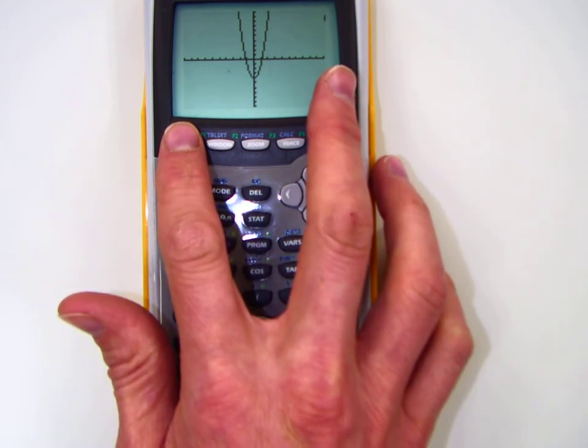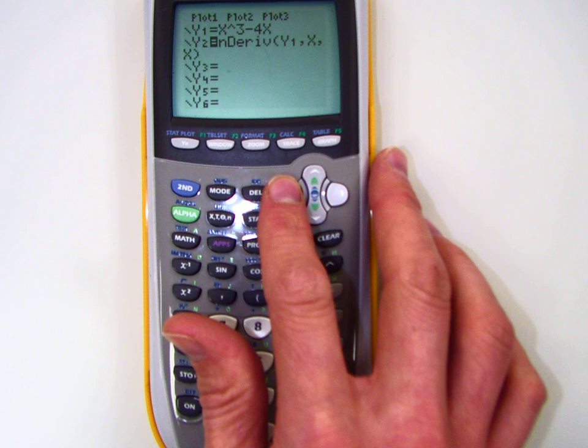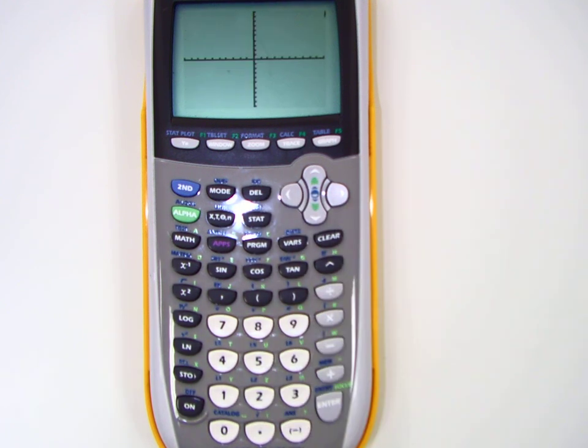So there's the derivative. Now if I want that one back, you go, boom, go back to y equals, go back to the equal sign, hit enter, so they're both black. Now it's going to graph both. It's a nice little feature. So there's my original and it's going to graph my derivative.